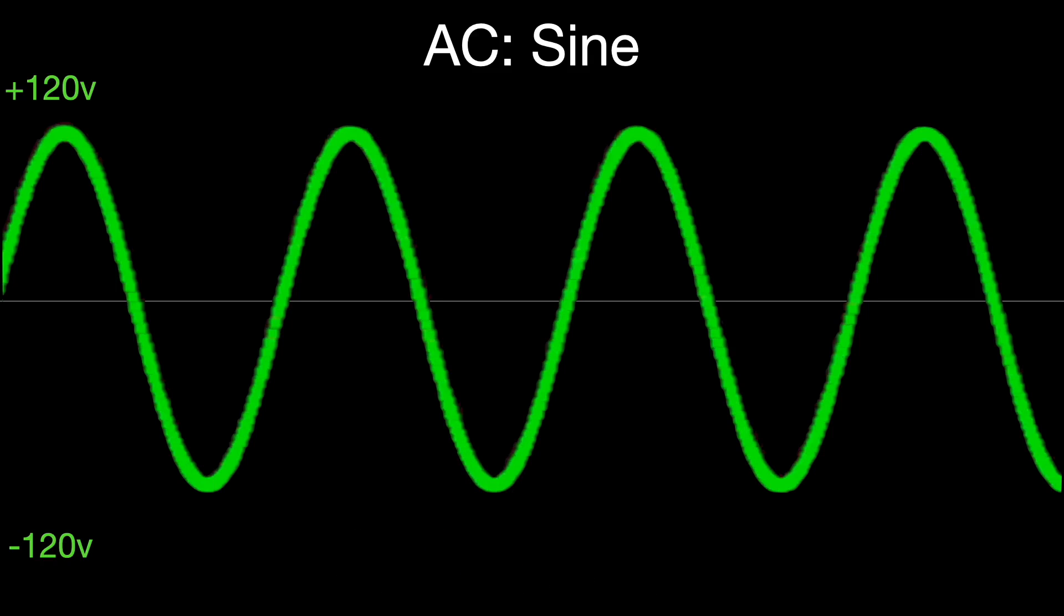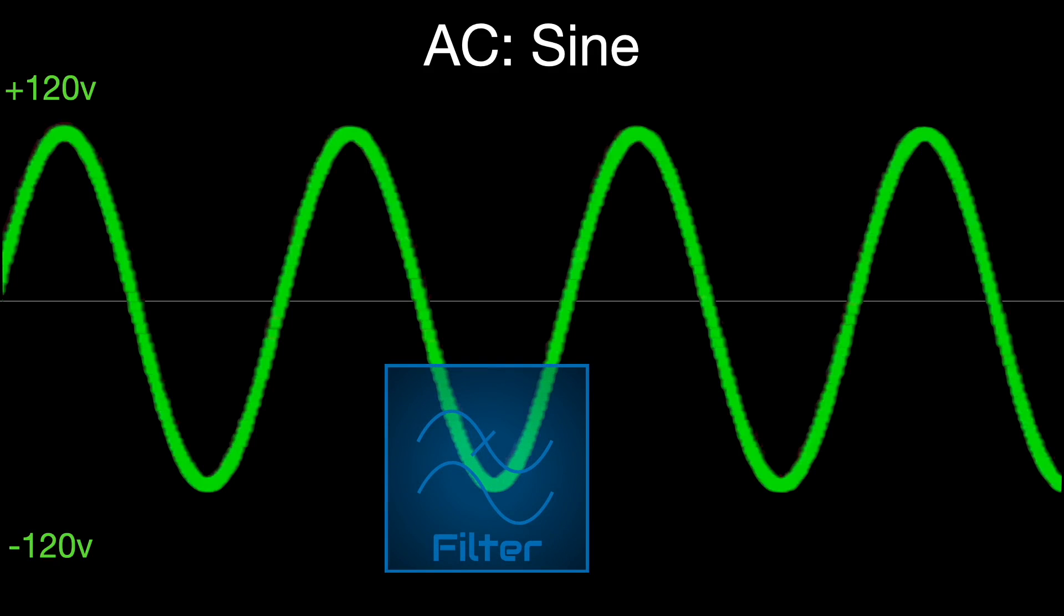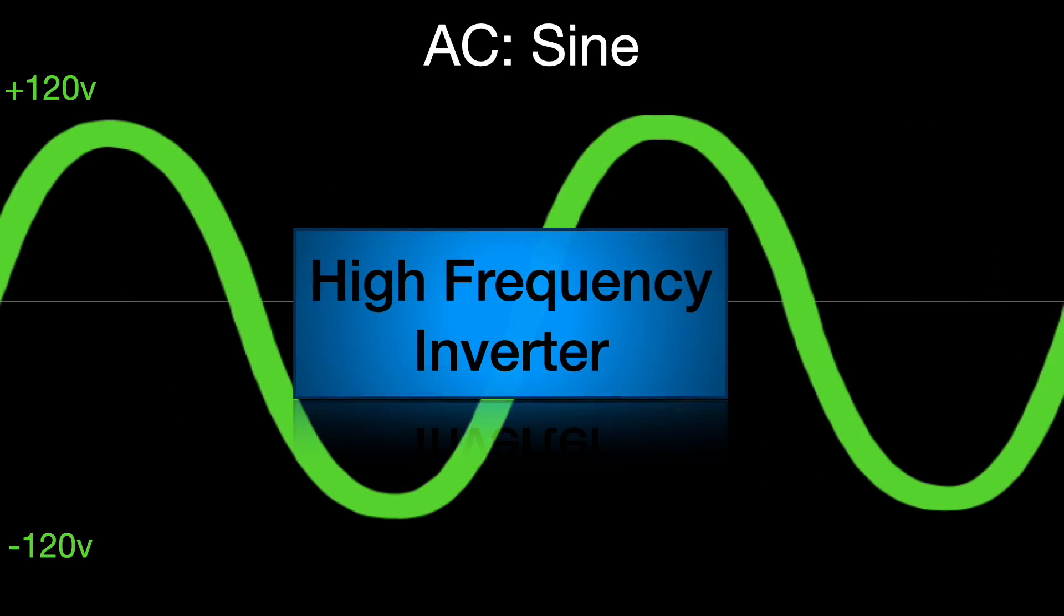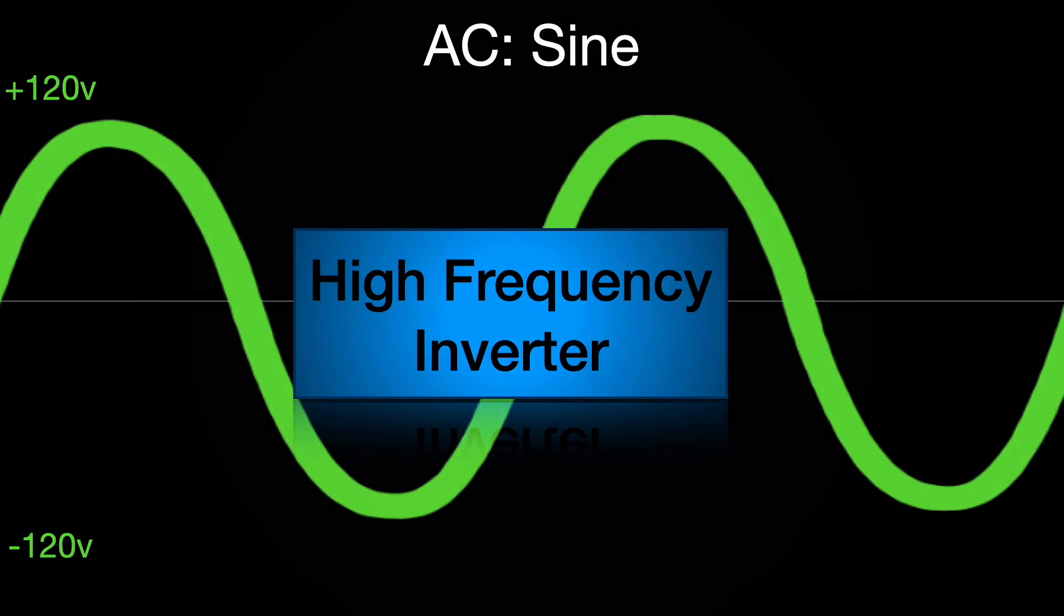So to smooth that out, we can use some filtering circuits and get our nice sine wave. And that is a very simplified version of what a high frequency inverter does.